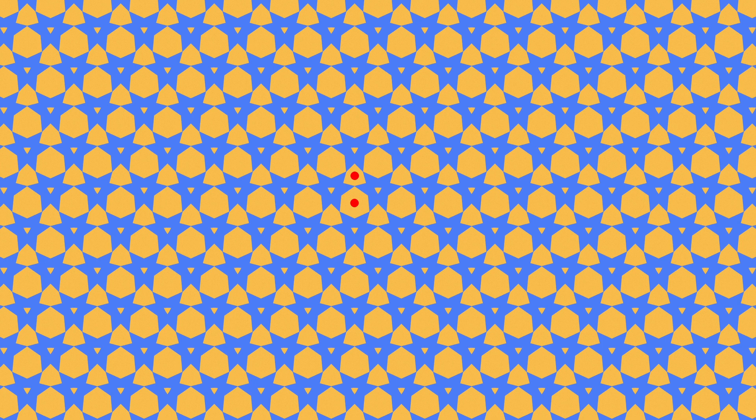In this pattern we have a six-pointed star, but this time there's no sixfold rotational symmetry — only threefold rotational symmetry with reflections at the center. We find two more threefold rotational points at the centers of the large and small distorted hexagons. The name is 'star 333'.